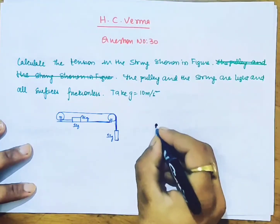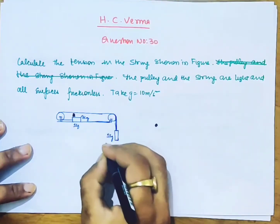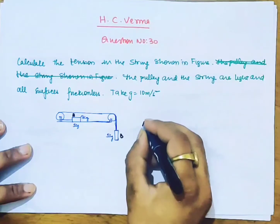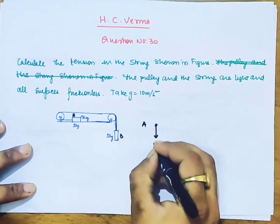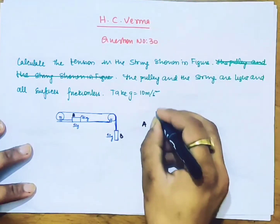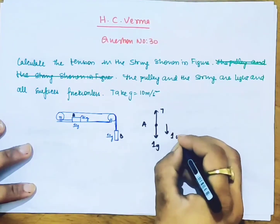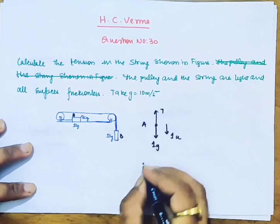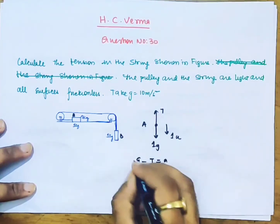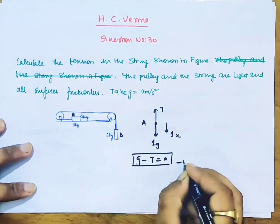Let's make the FBD for this block. Let's name them A and B, they both are 1kg each. So for block A, FBD is made: 1 into g, tension up, and it will go down obviously. So 1 into a. So g minus T equals a. This is our first equation.